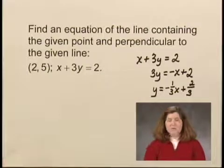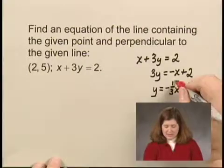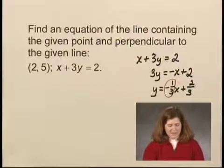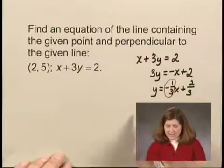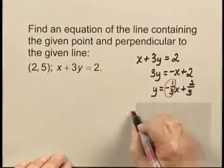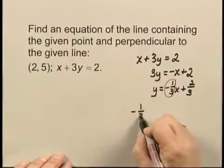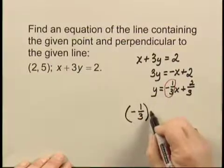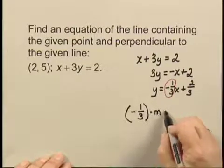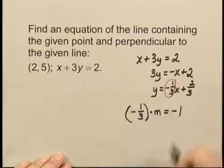Now, the slope of this line is negative 1 third. That is not the slope of the line we're looking for. The slope of the line we're looking for is some slope m, where the slope of this line times m has to equal negative 1.